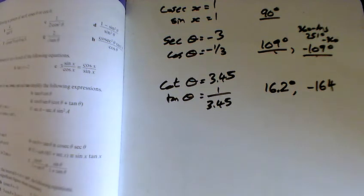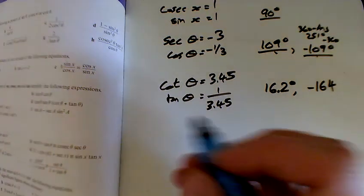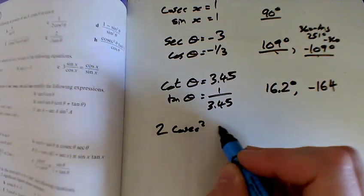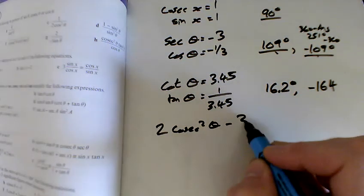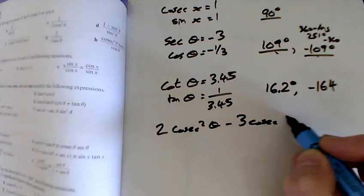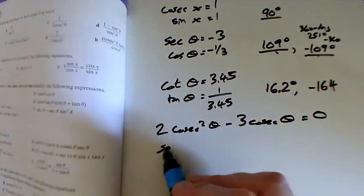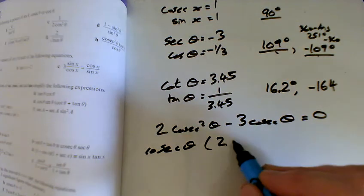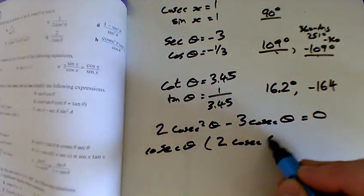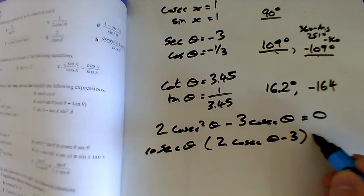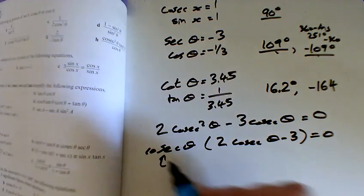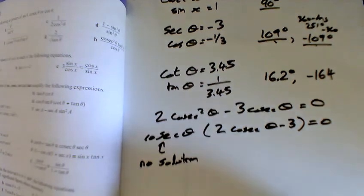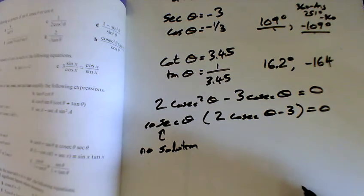I'll keep going, I'll do another one. D, we've got a quadratic, so we've got cosec squared theta minus 3 cosec theta equals 0. Factorize out, so cosec theta, lots of 2 cosec theta minus 3 equals 0. So either this equals 0, which never actually happens, does it? You never get a cosec equaling 0, so there's no solutions from that part there.